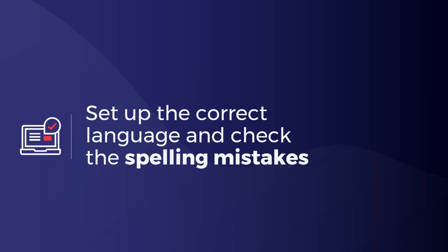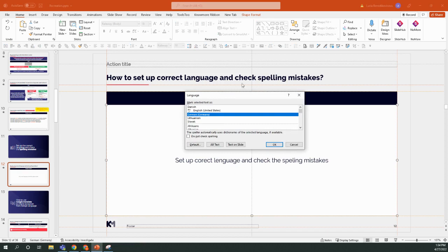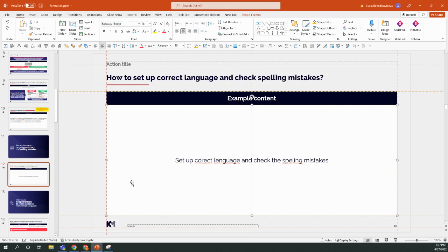Now we will discuss how to set up the correct language and check for spelling mistakes. As a general rule, slides should be set in the language they are written in. For example, if I click into a text box and see the language is set to German but the slide is in English, I can correct this by clicking the language area and choosing English (United States). I have a few options: clicking OK sets the language only for the selected box, 'Text on Slide' sets it for the current slide, and 'All Text' sets it for the whole presentation.